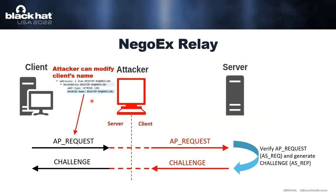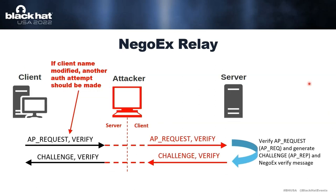In scenario two, we want to change the client name to avoid detection — if the original client name doesn't match the attacker's IP, the mismatch could reveal us. So we modify the AP Request, change the client name, relay it to the server, and get the challenge back. Then the second AP Request and Verify message are sent from client to server. In scenario one (no modification), we relay as-is; the server verifies everything and responds. Since the session is established between attacker and server, we drop the final messages, close the client connection, and have an established connection with the server.